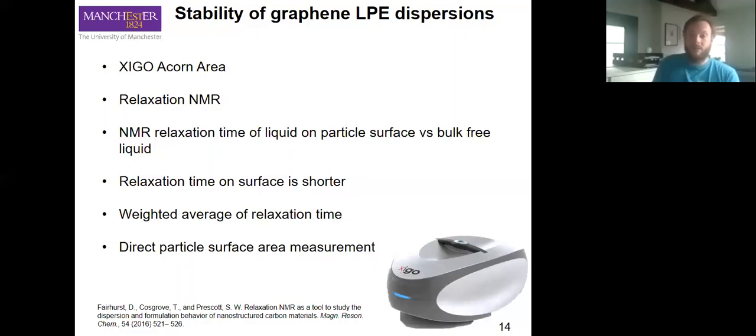In order to analyze our stability, we use a Zygo Acorn area. This is a relaxation NMR technique. The way this works is it compares the relaxation time of liquid on the particle surface versus that of bulk free liquid. Relaxation time on the liquid on the particle surface will be considerably shorter. It takes a weighted average of these two relaxation times.